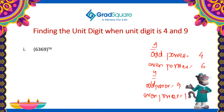In this example, 9 is raised to the power 56. 56 is an even power, so for even power the resultant will have 1 as the unit digit. In this example, 4 is raised to the power 40. 40 is an even number, so for an even power, the unit digit of the resultant will be 6.